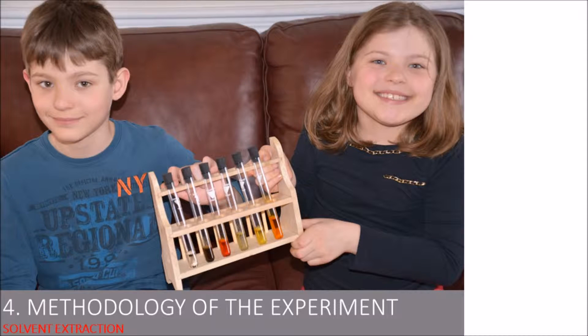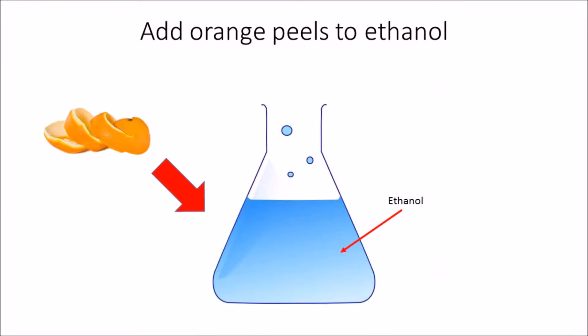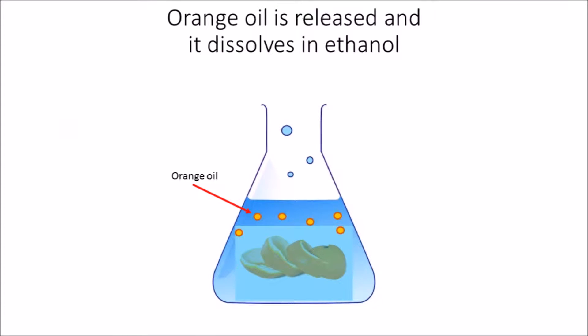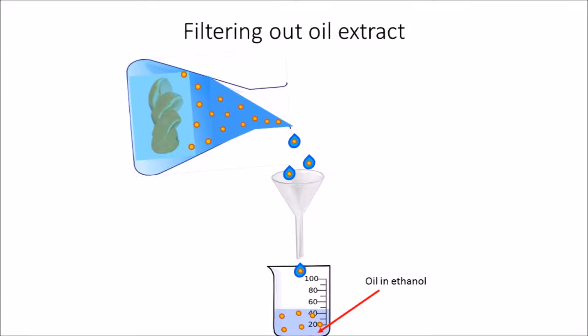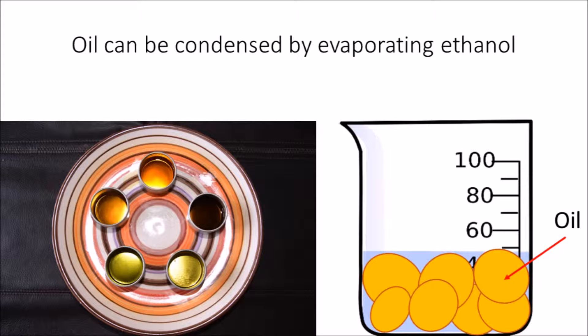Now we're going to talk about using solvent extraction to make perfume. First, we have to add orange peels to ethanol. After some time, orange oil is released and it dissolves in ethanol. At the end, we have to filter out the oil extract using a funnel and filter paper. We could also receive pure essential oils by evaporating the ethanol. Now we're going to show you how it's done in practice.